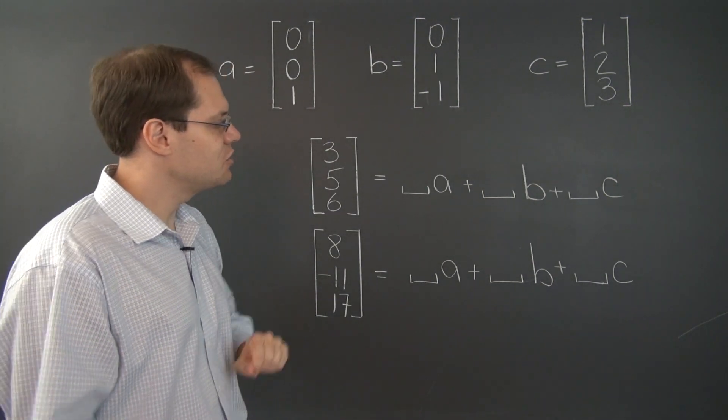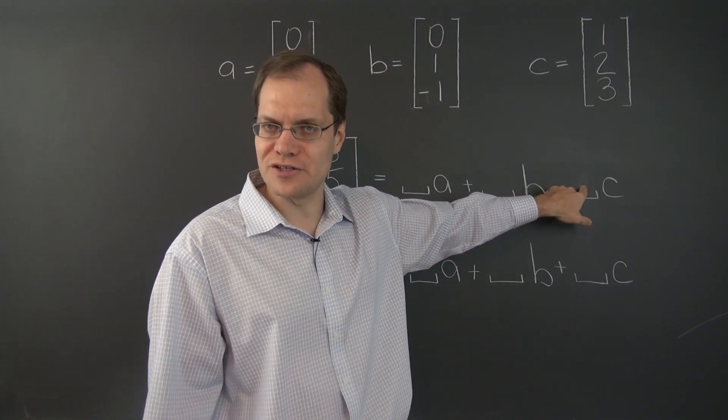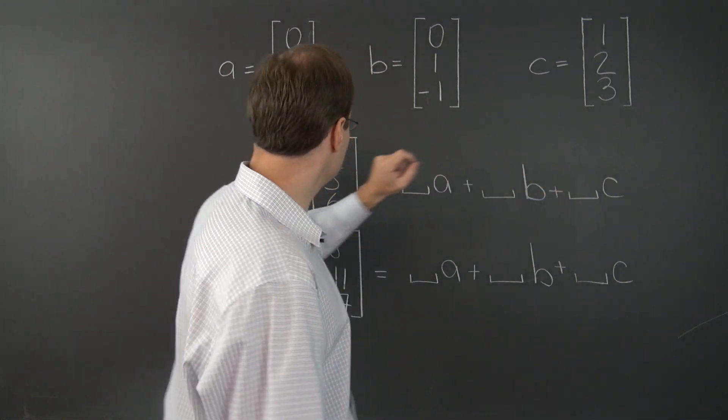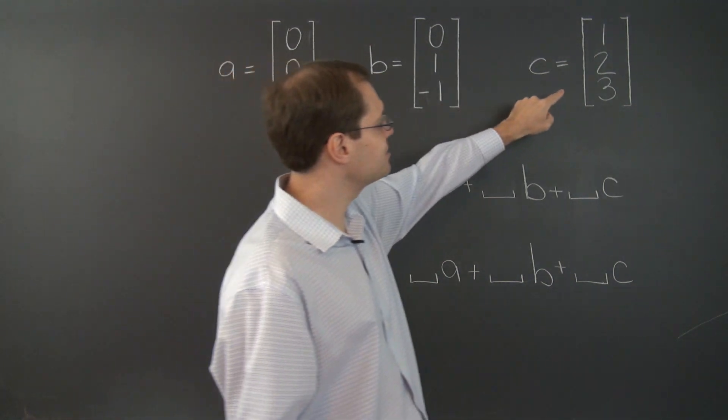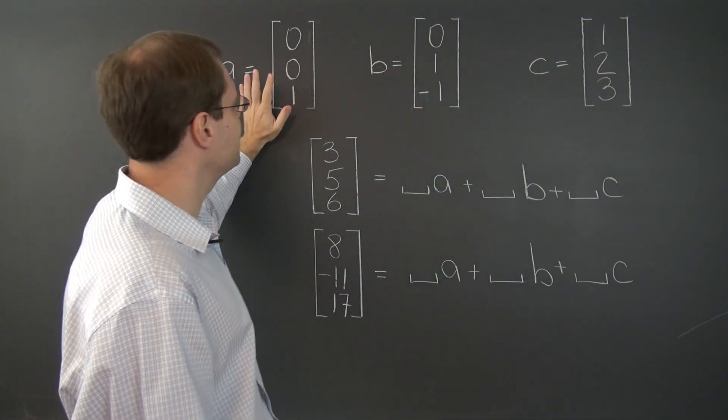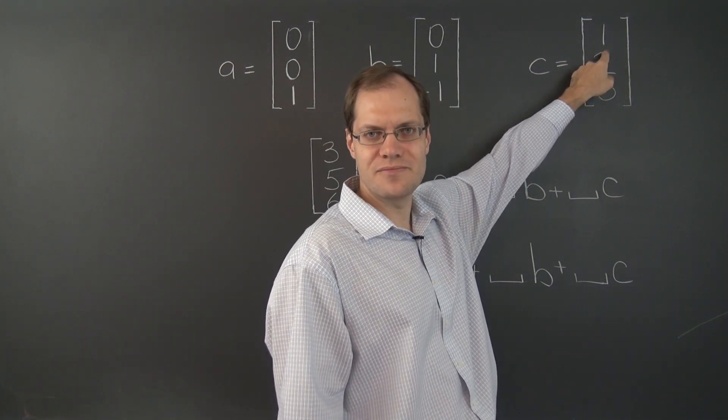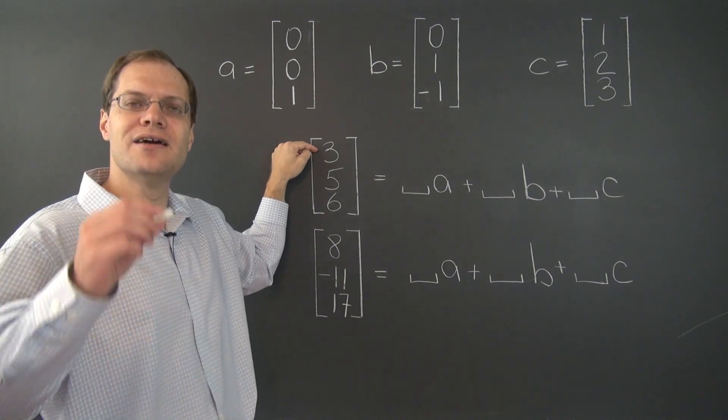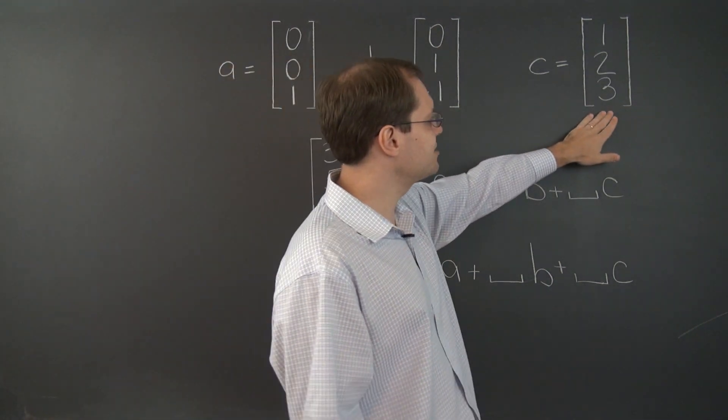And hopefully, you decided that it's the third coefficient that should be determined first, because it is our one and only chance to get the first entry of this vector right. Because the vector C is the only one among these three vectors that has a non-zero first entry. So if we have any chance of getting this three right correctly, we have to do it right here and now with the vector C.